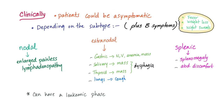Clinically, patients could be asymptomatic. Depending on the subtype, there are different sets of symptoms, plus B symptoms — which are fever, unintentional weight loss of more than 10% of total body weight, and drenching night sweats — can occur in any subtype. Nodal will present with enlarged, palpable, painless lymphadenopathy. Extranodal depends on location: gastric MALT lymphoma can cause nausea, vomiting, anemia, and a gastric mass; salivary MALT lymphoma causes a salivary gland mass; thyroid MALT lymphoma causes a thyroid mass; lung involvement causes cough; and esophageal involvement can cause dysphagia. Splenic type leads to splenomegaly and abdominal discomfort, because the enlarged spleen presses on the diaphragm and abdomen.